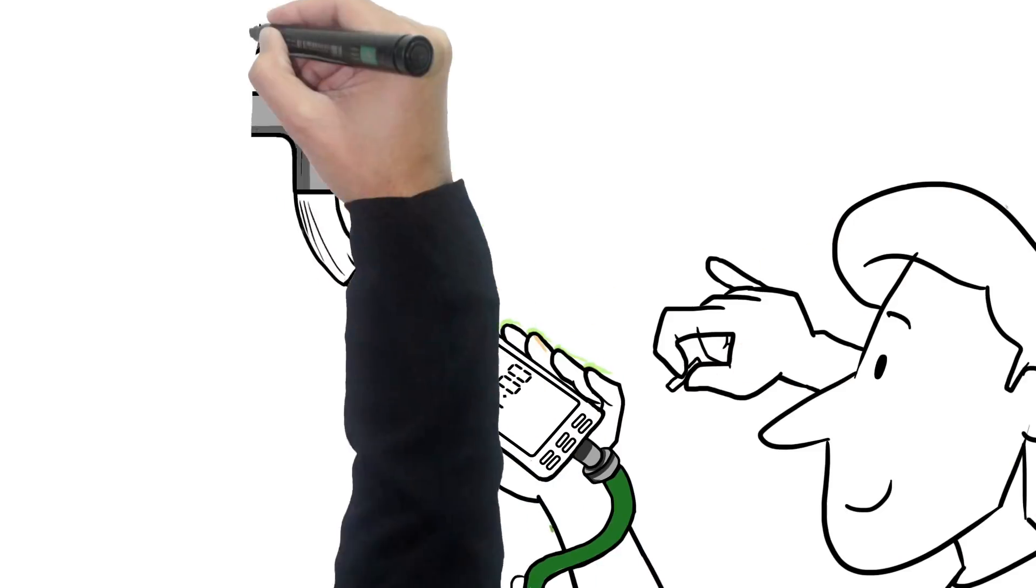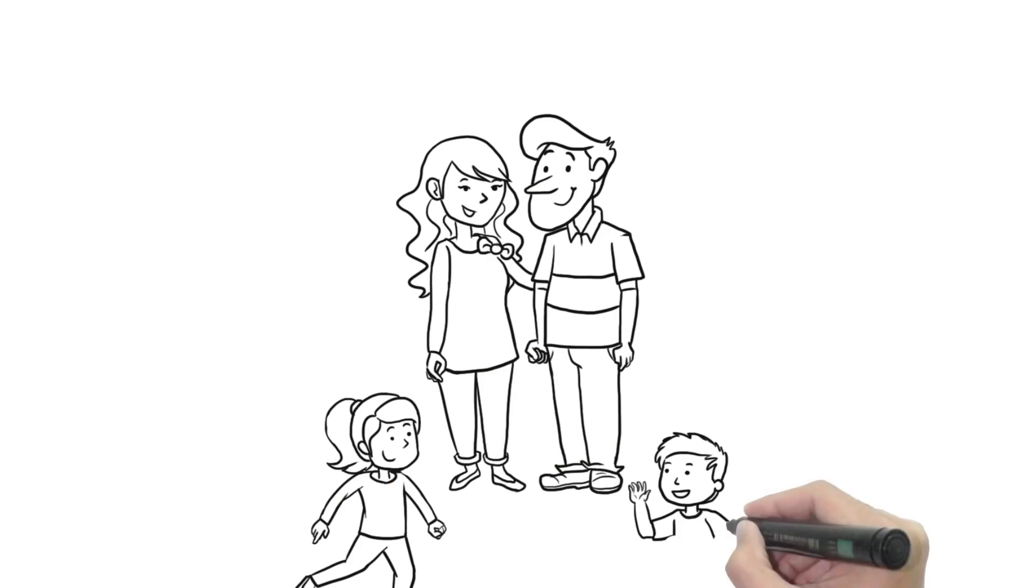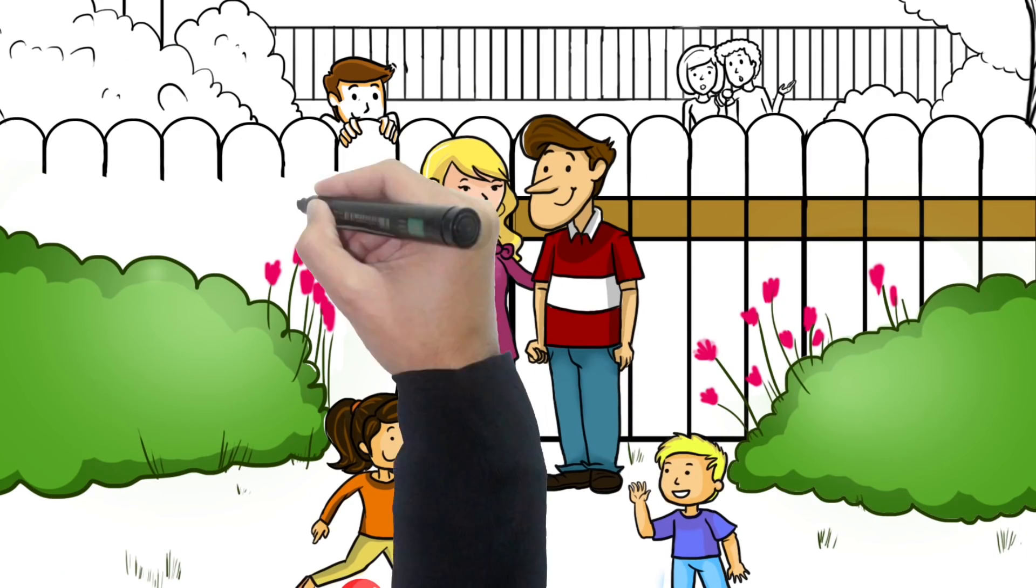Larry put batteries in the faucet timer, programmed it to water every night, and that was it. Soon, Larry had a green lawn that made his family happy and his neighbors paying compliments.